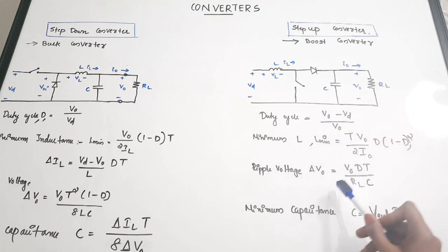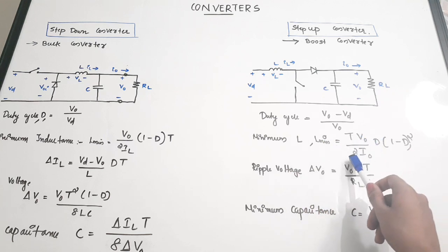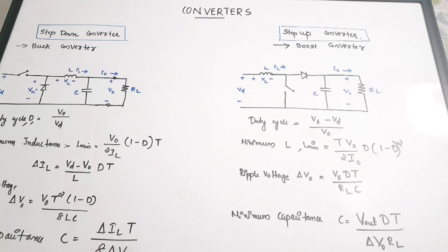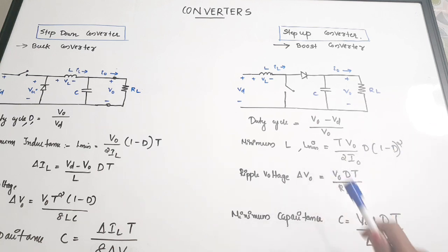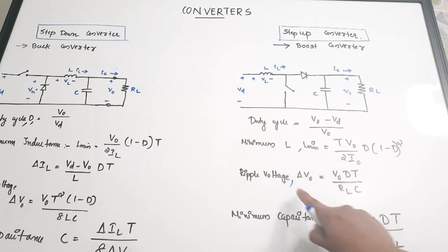The duty cycle of the boost converter is given by: D = (Vout − Vd) / Vout, where Vout is the output voltage and Vd is the input voltage. The minimum inductance is: L_min = T × V0 / (2 × I0) × D × (1 − D)², where all variables carry the same meaning as before.